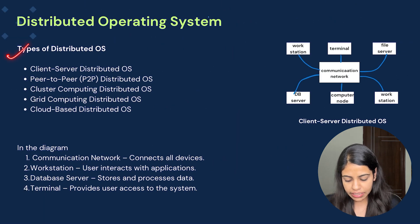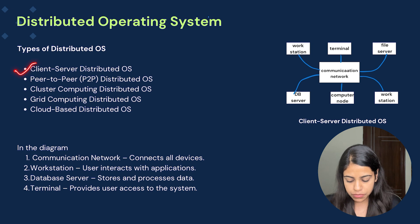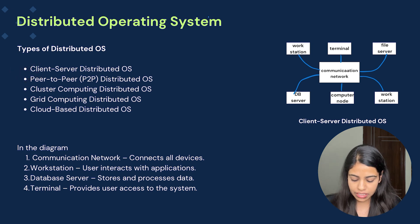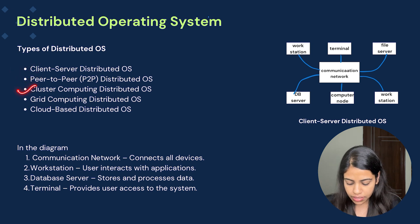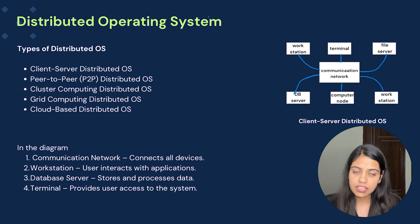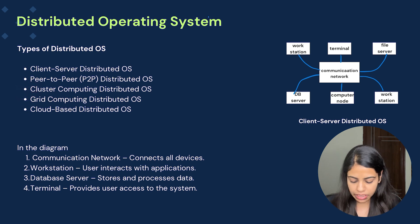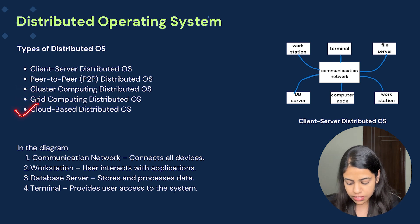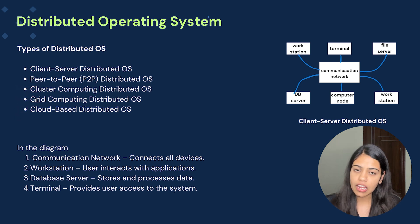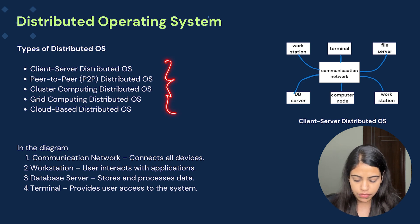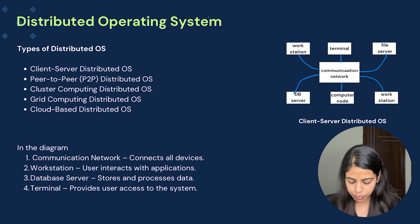Now, the types of distributed OS: first is client-server distributed OS; second is peer-to-peer distributed OS; third is cluster computing distributed OS; fourth is grid computing distributed OS; and fifth is cloud-based distributed OS.